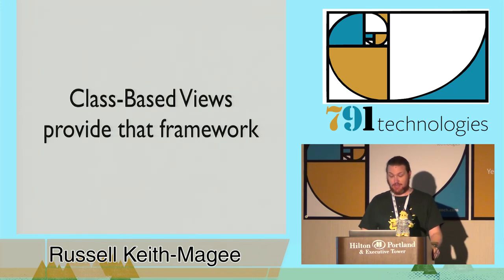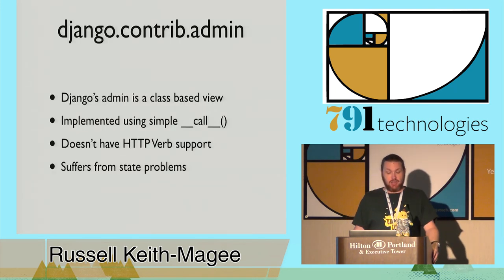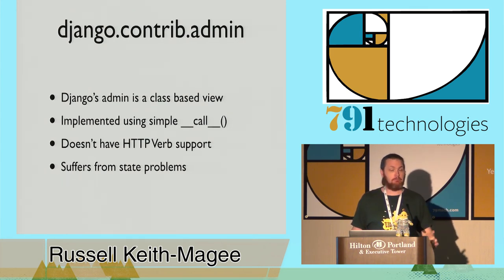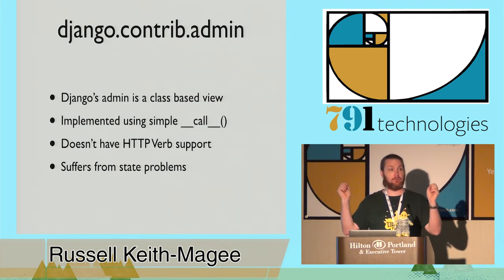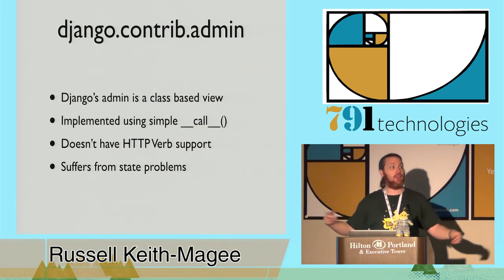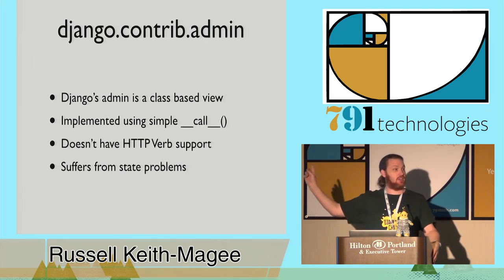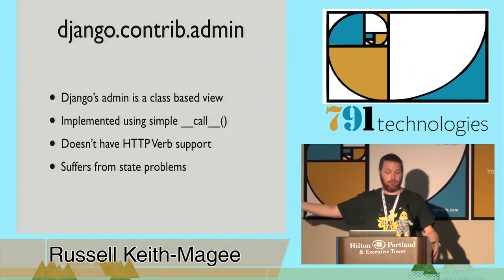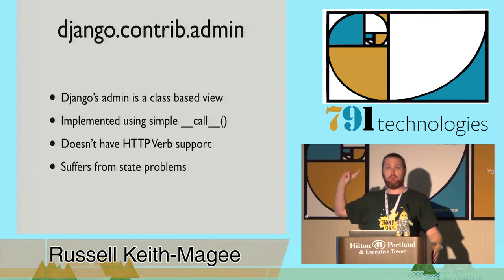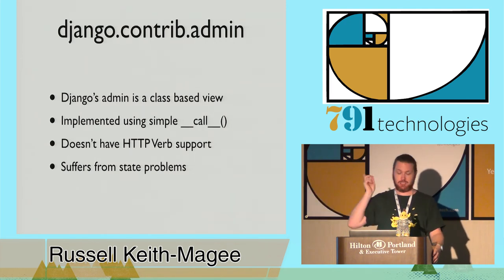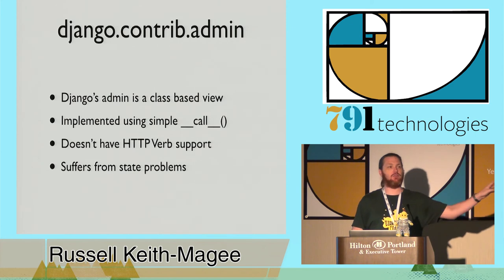To a certain level, this is already being done. django.contrib.admin is a class-based view - it doesn't eat Django's own dog food, but it is class-based: you've got an admin object you deploy into a URL structure that knows how to do interesting things. It's implemented using a single-call method, which is one of the approaches the class-based views delivered in 1.3 rejected because of security implications - dig into the wiki if you want details.